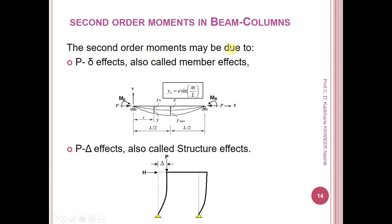Second-order moments in a beam column may arise due to two effects. The first is the P-delta effect, also called member effects, for a beam with hinge support at one point and roller support at the other. The second is the P-delta structure effects for a frame with two columns and a horizontal beam subjected to vertical gravity loads and horizontal wind load at the joint. Here the column is subjected to axial load as well as bending moment MA and MB.